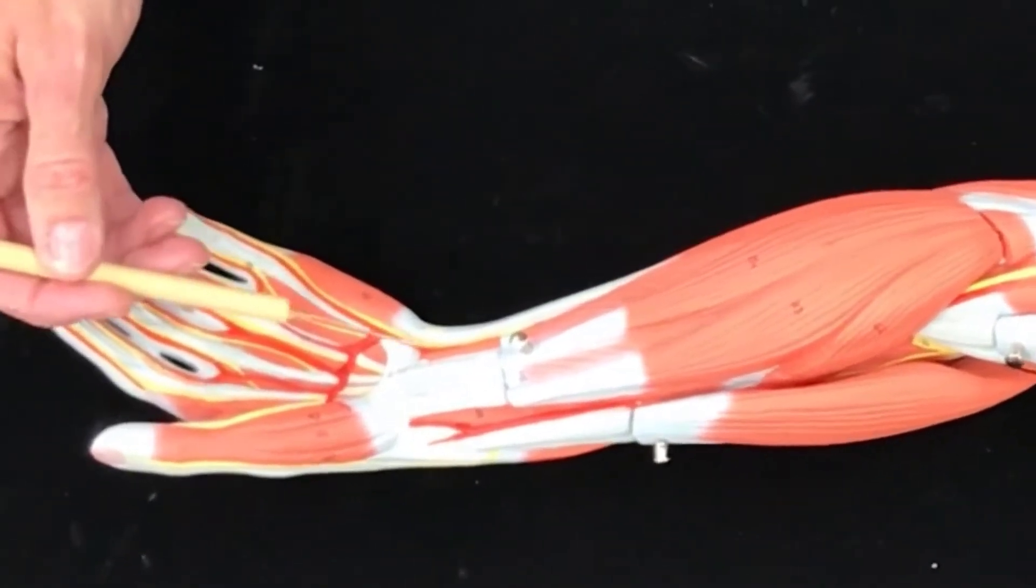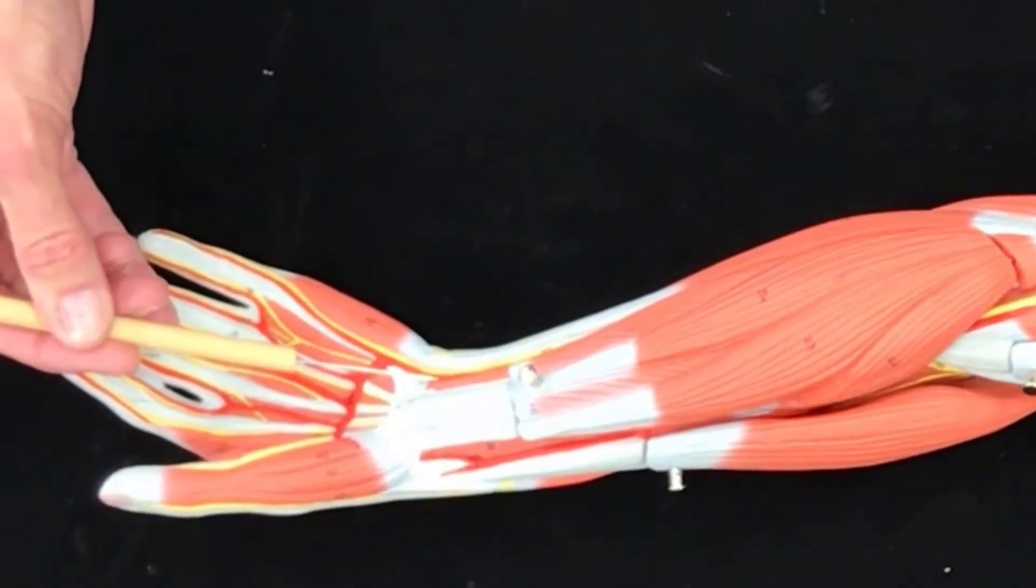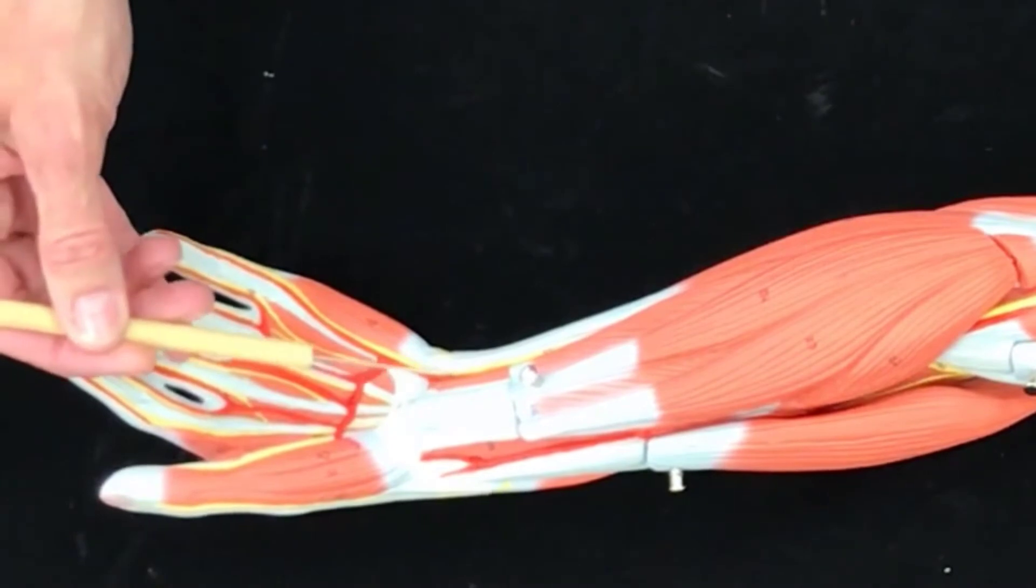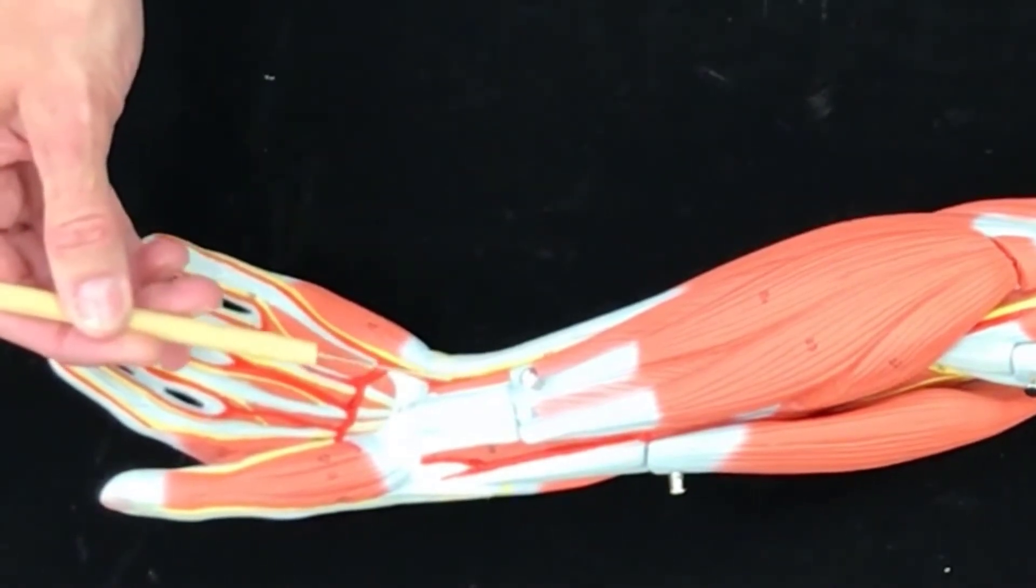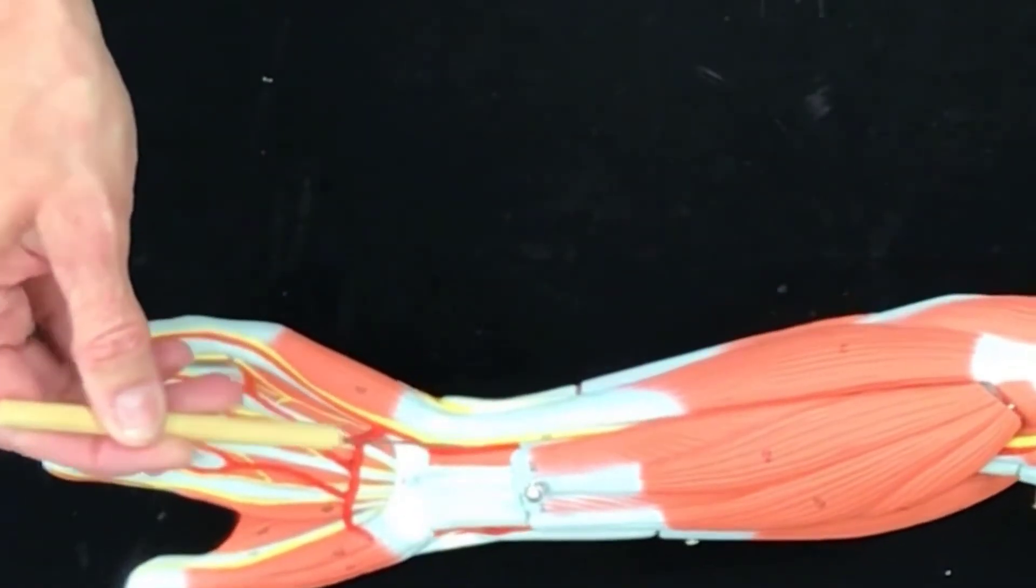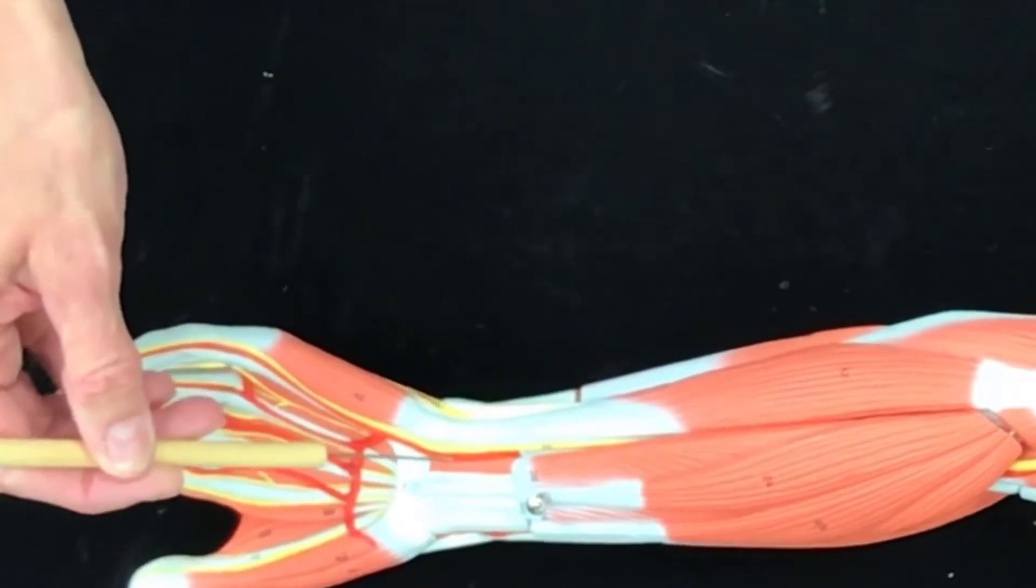Then this little guy right here is the ulnar artery. So the ulnar artery, notice it's kind of buried. That's why we don't use that for pulse.